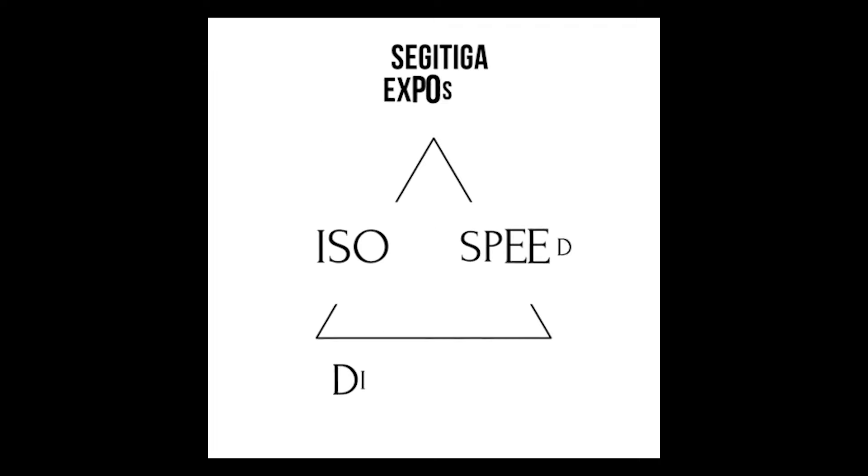dan three point light. Itu sebetulnya sebuah teori mendasar di dalam fotografi. Segitiga eksposur itu kan isu, diaframa, kecepatan — itu jelas, seperti undang-undang. Karena semua menggunakan sistem itu: ada ISO, ada diaframa, ada kecepatan.